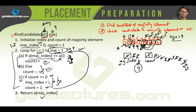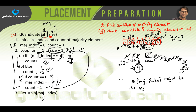The loop is finished, so we return the location of maj_index, which is 4. Since count is greater than 0, we have found an element that may be the candidate of the majority element. Therefore, a[maj_index] might be the majority element because count is greater than 0.